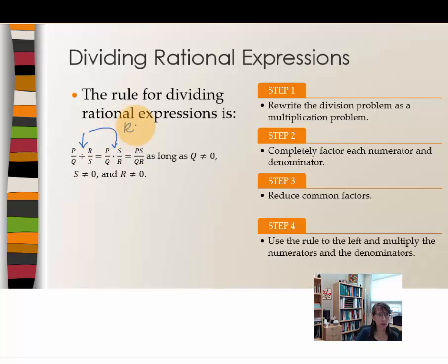Some of you know this as the keep change flip technique. That means you keep your first rational expression, change division to multiplication, flip the second rational expression. And again, no matter what terms remain in your denominator, neither one of those can be equal to zero.